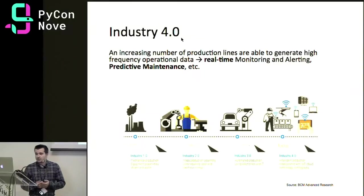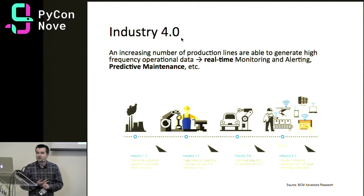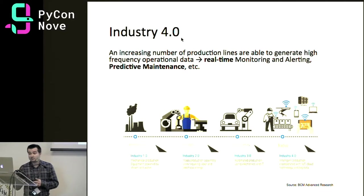Industry 4.0 is basically the idea to add computer science intelligence into the physical equipment. We have production lines, possibly distributed along different plants, and if we put digitalization on these machines, we can enable many different new use cases: real-time monitoring, real-time alerting, the popular predictive maintenance — trying to predict failures before they take place.